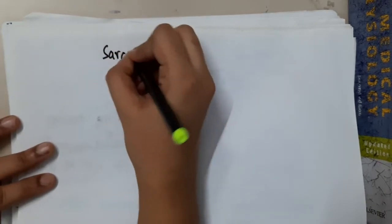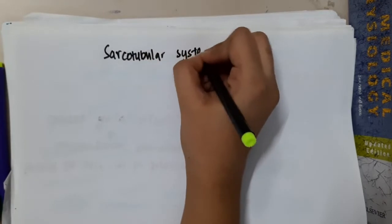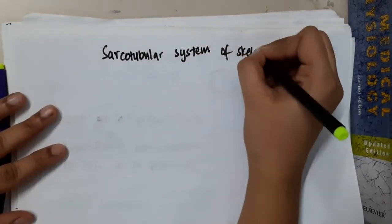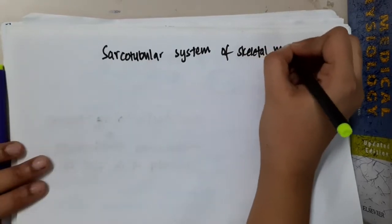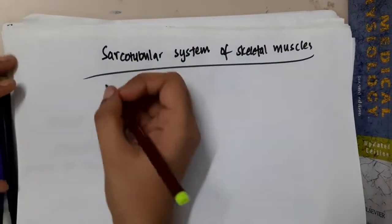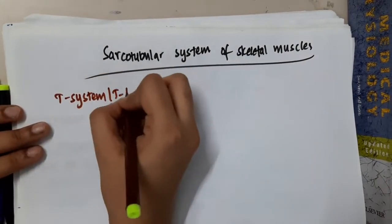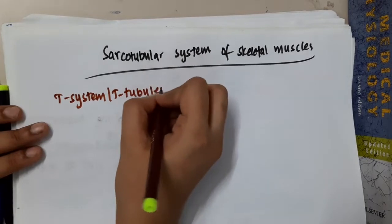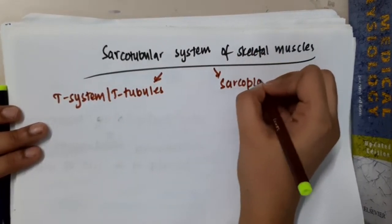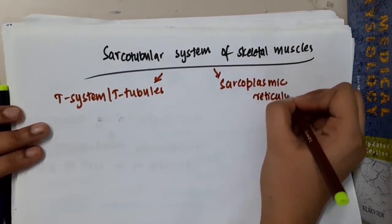Let us now learn some important points about the sarcotubular system of skeletal muscles. The sarcotubular system consists of two components: the T-system of tubules, also called T-tubules, and the sarcoplasmic reticulum.